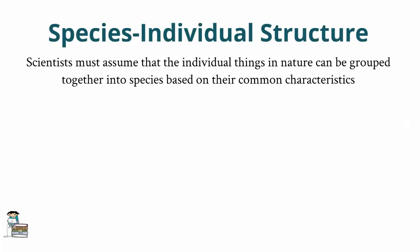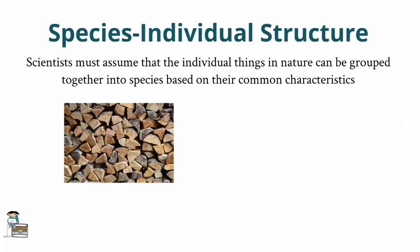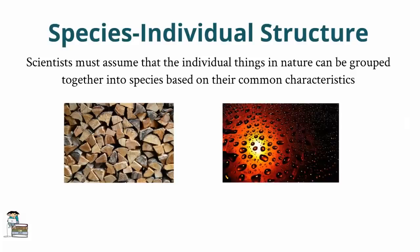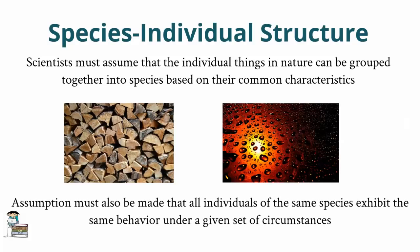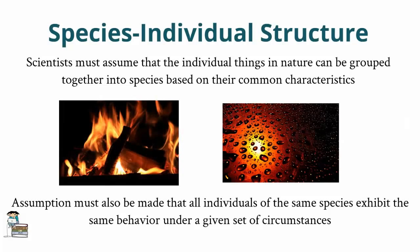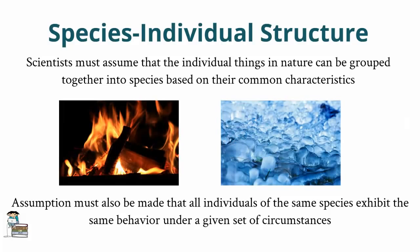So, for example, all the different pieces of wood in nature make up the species of wood, while all the individual droplets of water make up the species of water. And furthermore, science must then assume that individuals of the same species exhibit the same behavior under a given set of circumstances. So, for example, scientists assume that all pieces of wood can burn and that all droplets of water can freeze.